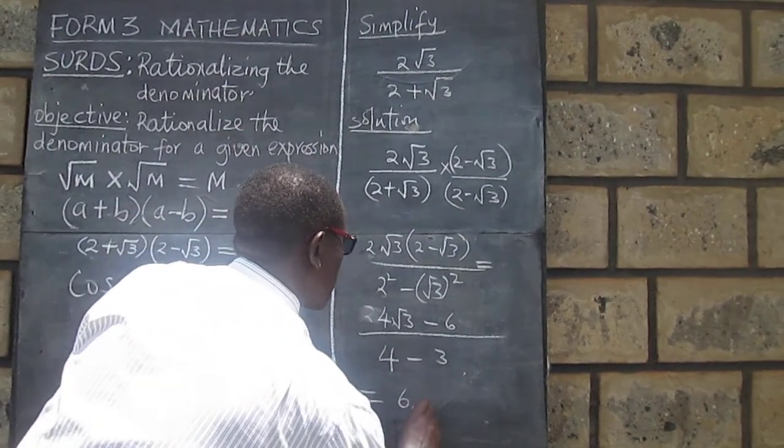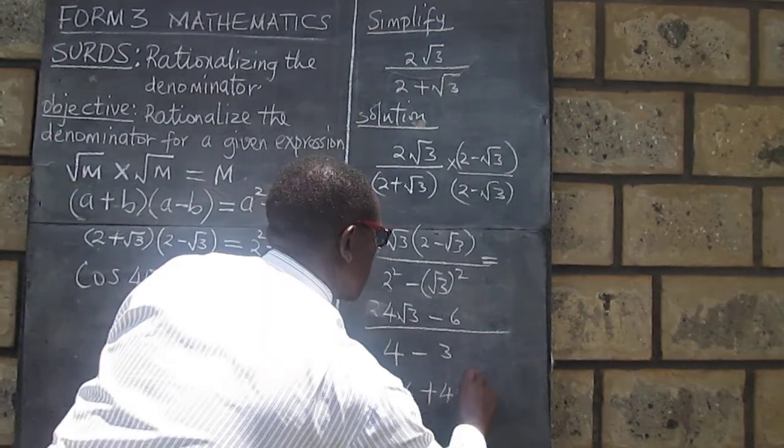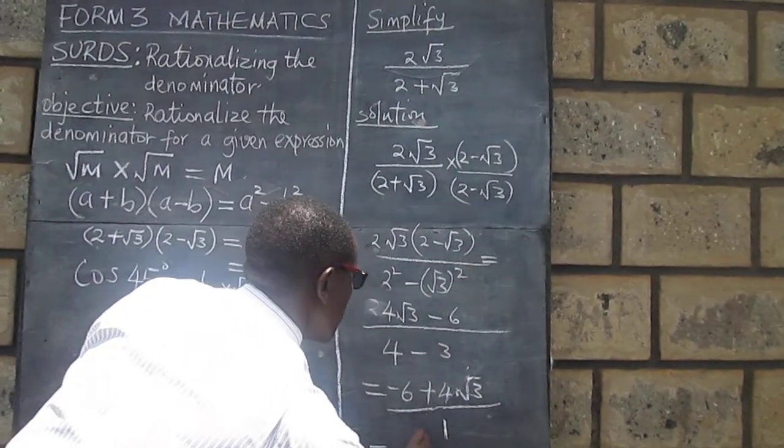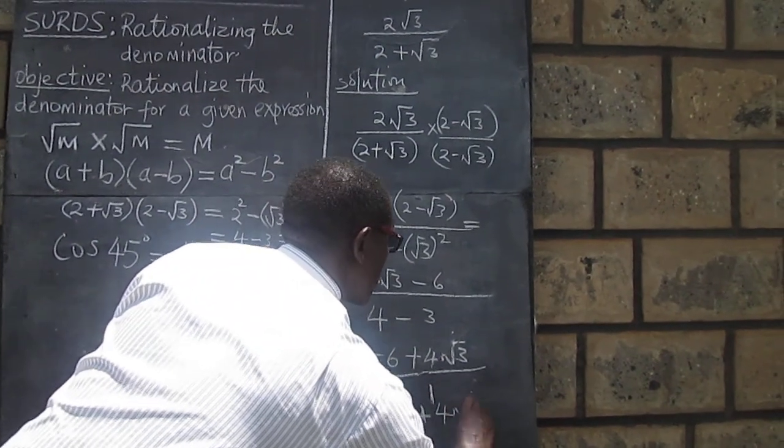And therefore our final answer becomes 4√3 minus 6 over 1, or simply 4√3 minus 6.